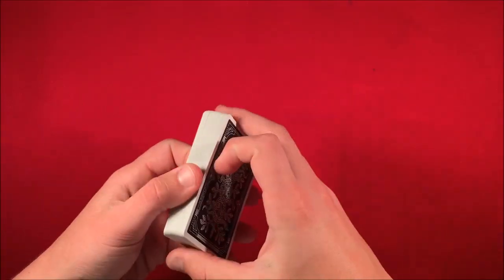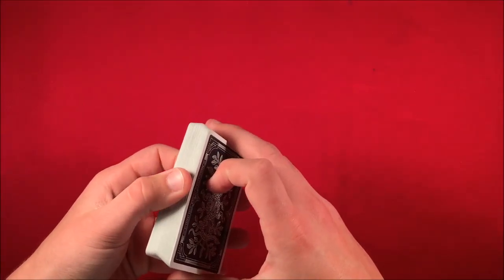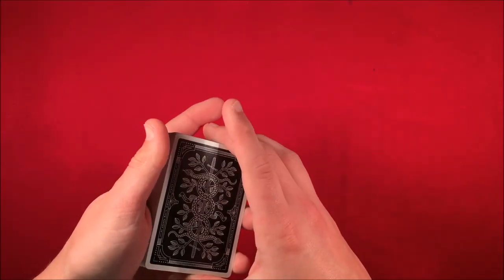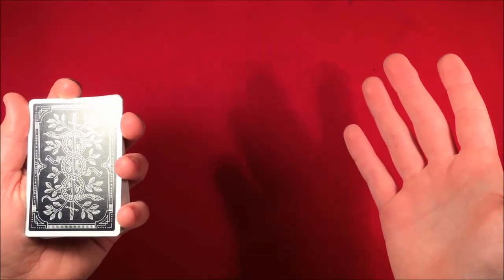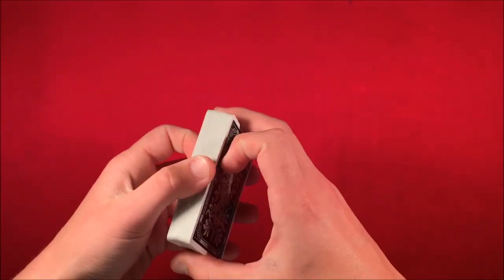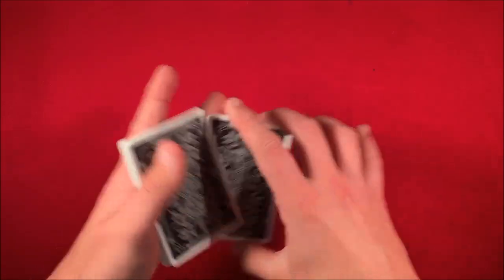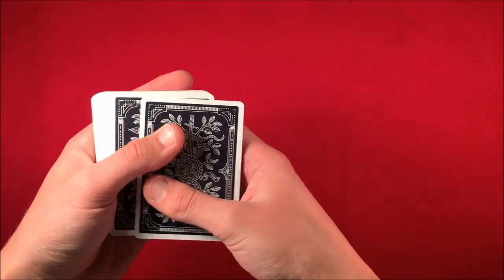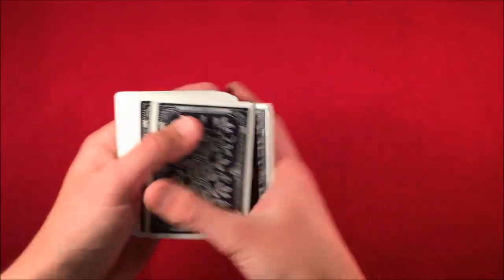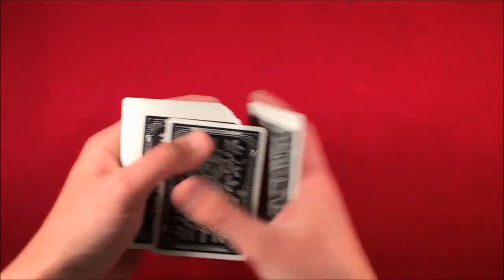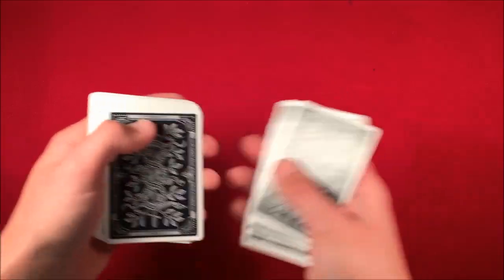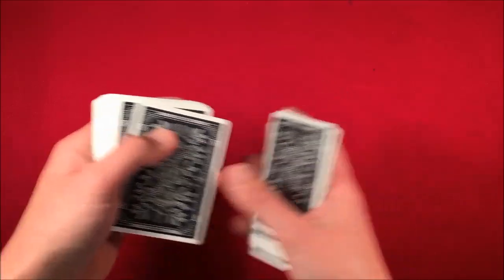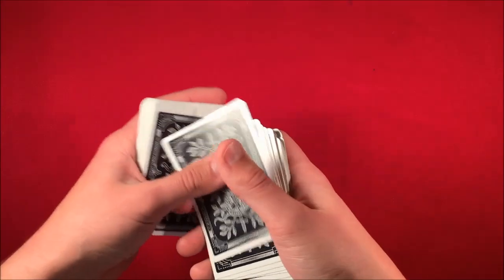Alright, so I am going to be teaching the trick a little bit different than the way I showed it in the performance, just because in the performance, it involves a lot of estimation, a lot of guessing, and this is going to make the trick work every single time. So to start off, what you want to do is take 25 cards. So 1, 2, 3, 4, 5, 6, 7, 8, 9, 10, 11, 12, 13, 14, 15, 16, 17, 18, 19, 20, 21, 22, 23, 24, 25. We actually only need 25.